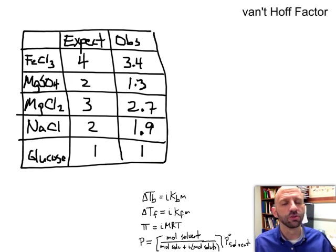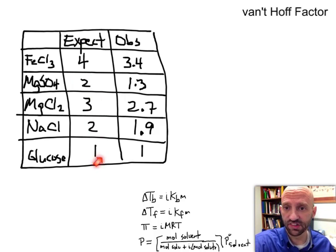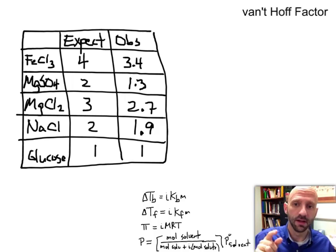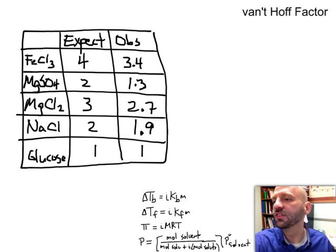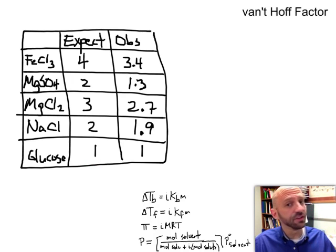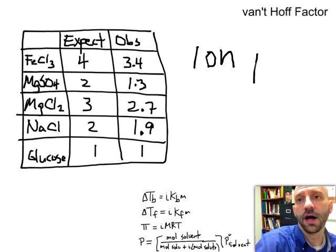So the van't Hoff factor is only being influenced by ionic solutes. So then, what accounts for the difference between what we expect to see and what we actually see? As you can see from the chart, what we actually observe is always a wee bit less than what we had expected to see. And it comes down to a pretty easy phenomenon to understand and that is something called ion pairing.